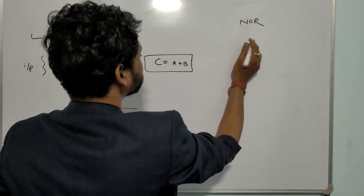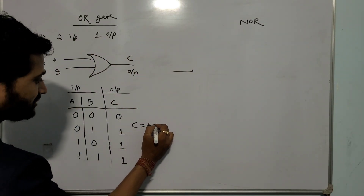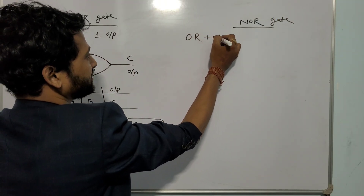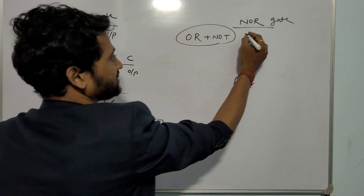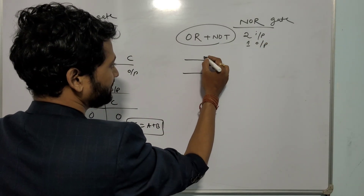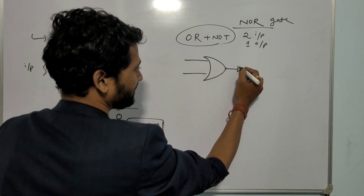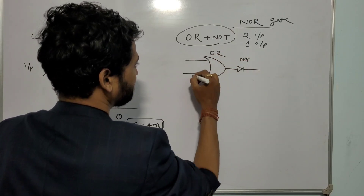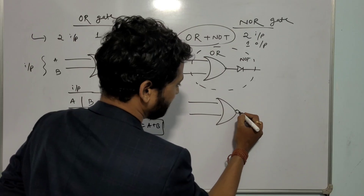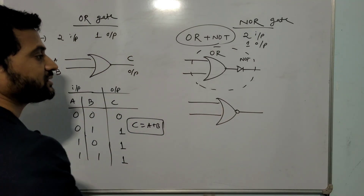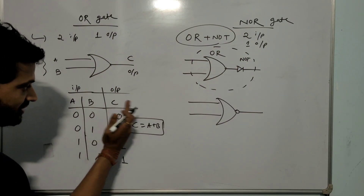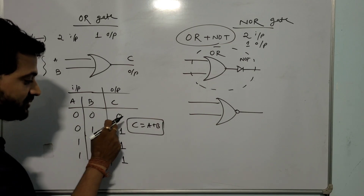Next is the NOR gate. The NOR gate also has two inputs and one output. The symbol of the NOR gate consists of an OR gate followed by a NOT gate. You can also draw it in the combined form. The NOR gate is the inverse of the OR gate.